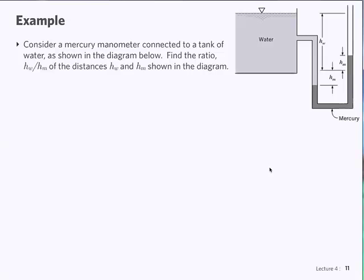So, this case has a tank of water and a mercury manometer. And the question that you're being asked is to find the ratio between HW over HM. In case you can't see very well in my picture, this is HW, and this is HM, and this is HM. So, these two guys are equal. They're both HM, and this is HW. And you're asked for the ratio, HM to HW.